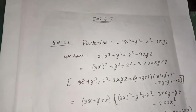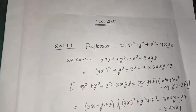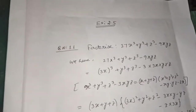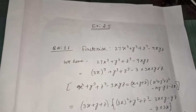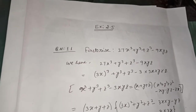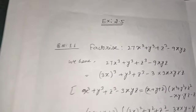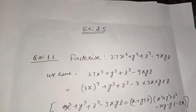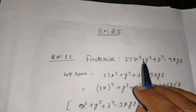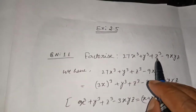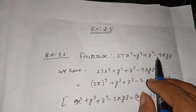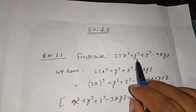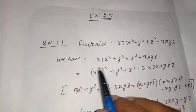Today I am going to start from question number 11. The question says: factorize 27x³ + y³ + z³ - 9xyz. You have to factorize this expression.